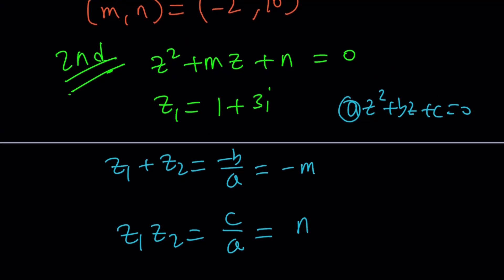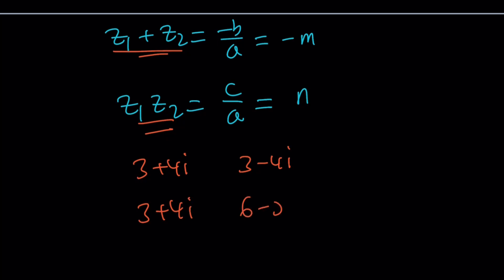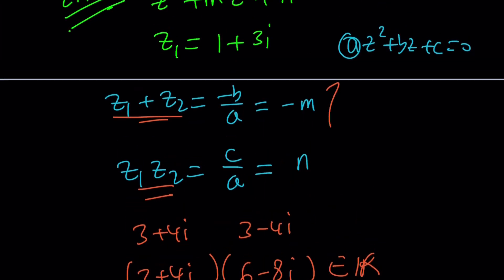Since m and n are real numbers, the sum and product of the two roots are both real. If you multiply a complex number by its conjugate you get a real number, and their sum is also real. If instead you had 3 plus 4i and 6 minus 8i, their product could be real but their sum would not, because the imaginary parts don't cancel. So the key insight is: since 1 plus 3i is a solution, 1 minus 3i must be the other solution.